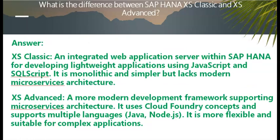What is the difference between SAP HANA XS Classic and XS Advanced? XS Classic is an integrated web application server within SAP HANA for developing lightweight applications using JavaScript and SQL Script. It is monolithic and simpler but lacks modern microservices architecture. XS Advanced is a more modern development framework supporting microservices architecture. It uses Cloud Foundry concepts and supports multiple languages — Java, Node.js — and is more flexible and suitable for complex applications.